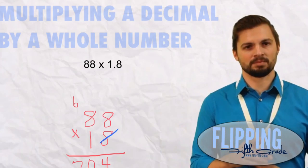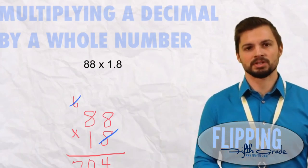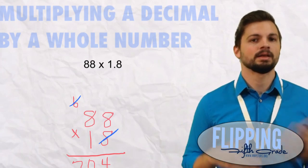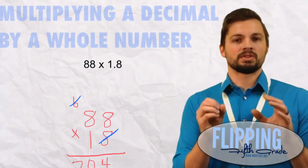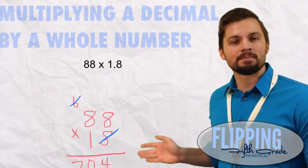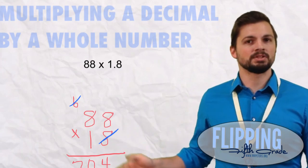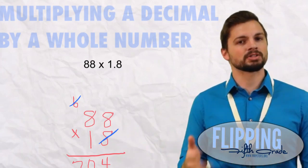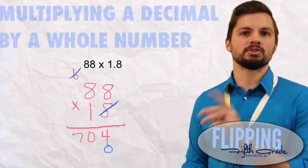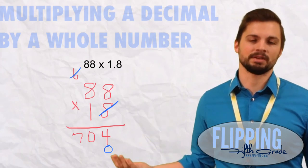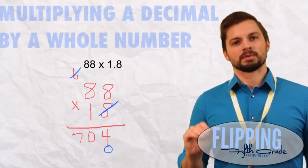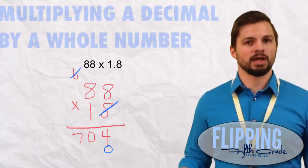Now, very important step. Remember MOMA, multiply, drop the zero, multiply and add. So this is the O in MOMA. We must drop that zero. Drop the zero because we're not multiplying by one, we're actually multiplying by 10. So now we do 1 times 8 and 1 times 8 which is going to give us 88. So our second partial product is 880.